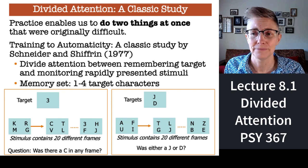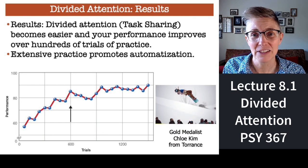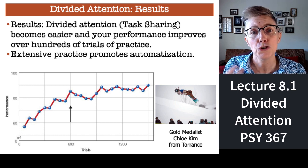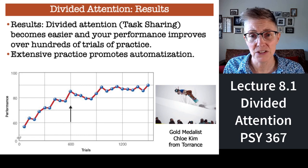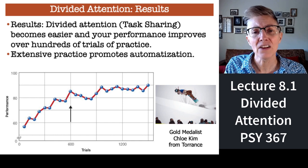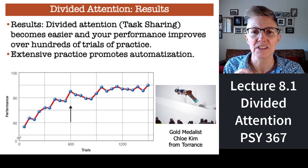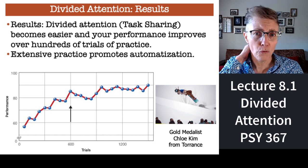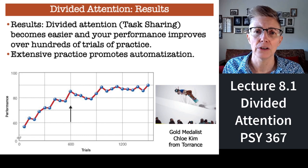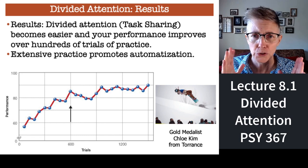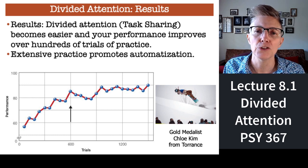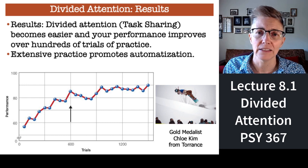What Snyder and Schifrin found is that yes, you can divide your attention across two simple tasks, but it requires a whole lot of practice. If people performed this task for hundreds of trials over and over again, they could learn to divide their attention across the two tasks, and their performance in both tasks steadily increased with more practice.